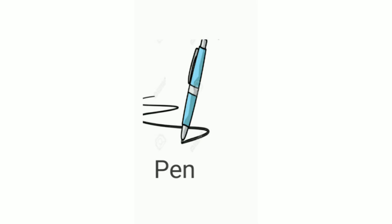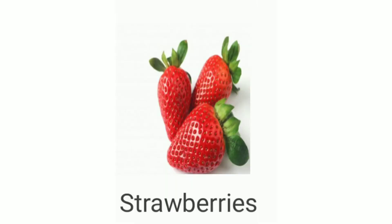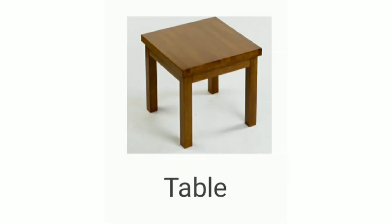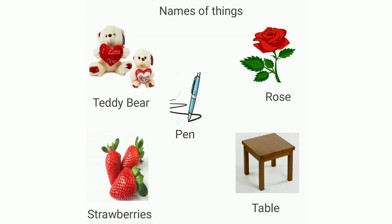Strawberry is the name of that particular fruit, so it is a naming word and a noun. Table is a name we give to furniture with four legs, so table is a noun. All these words are names that represent a particular thing, and so these are all nouns.